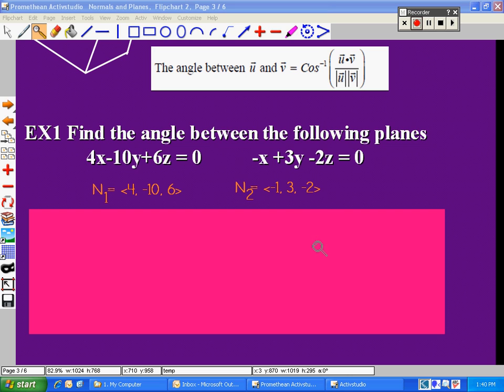So here are the two normal vectors: N1 = <4, -10, 6> and N2 = <-1, 3, -2>. We continue the problem by plugging in to the angle between formula. Find the dot product of N1 and N2, find the magnitude of each, plug in and take the cosine inverse. Your final answer should be 175.69 degrees as the angle between the two planes.